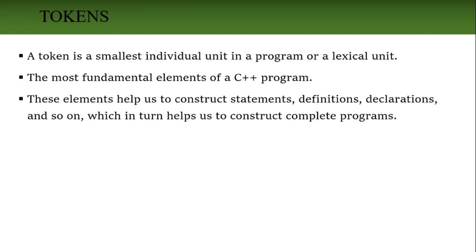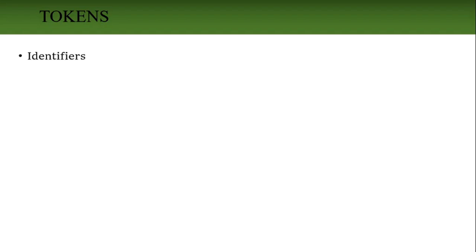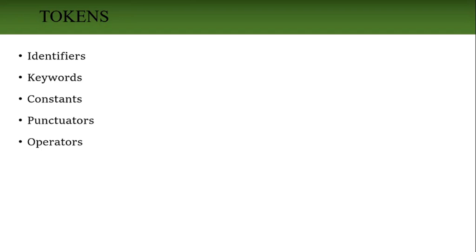We can declare variables and functions, write complete function code. By using these tokens we write all the programs. So a token is the most fundamental element using which we construct statements, definitions, declarations, and so on. In C++, the tokens are: identifiers, keywords, constants, punctuators, and operators. Now we will see them one by one.